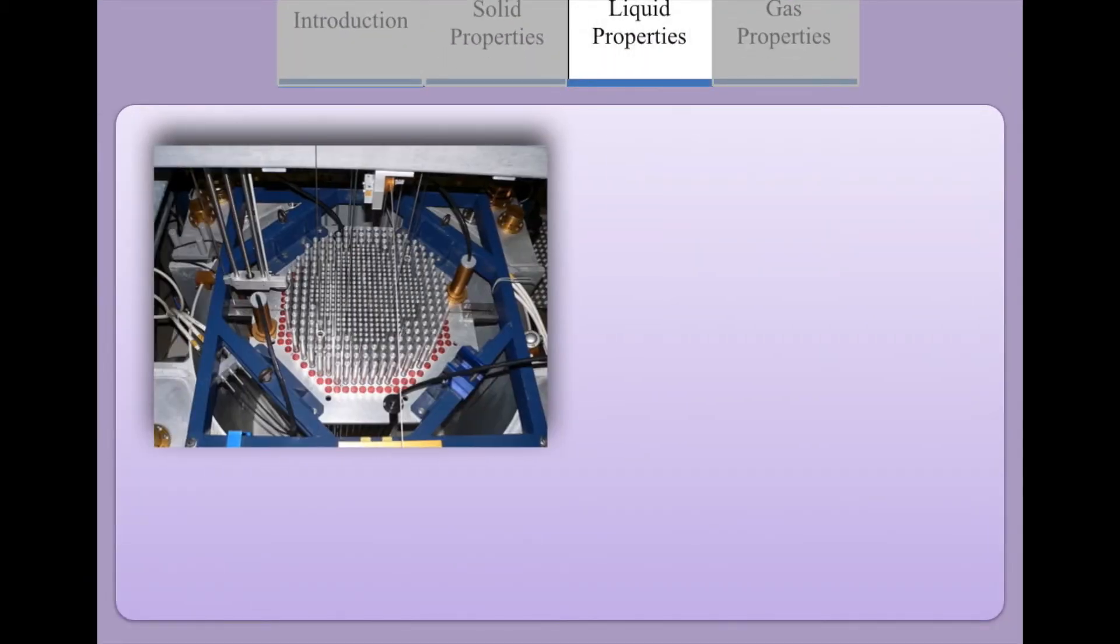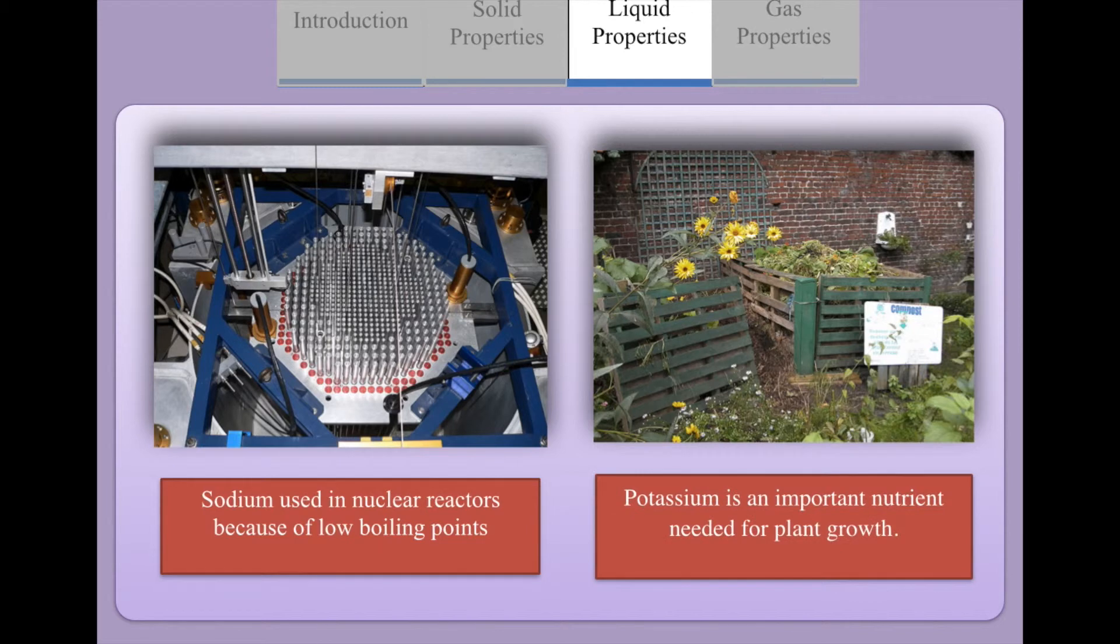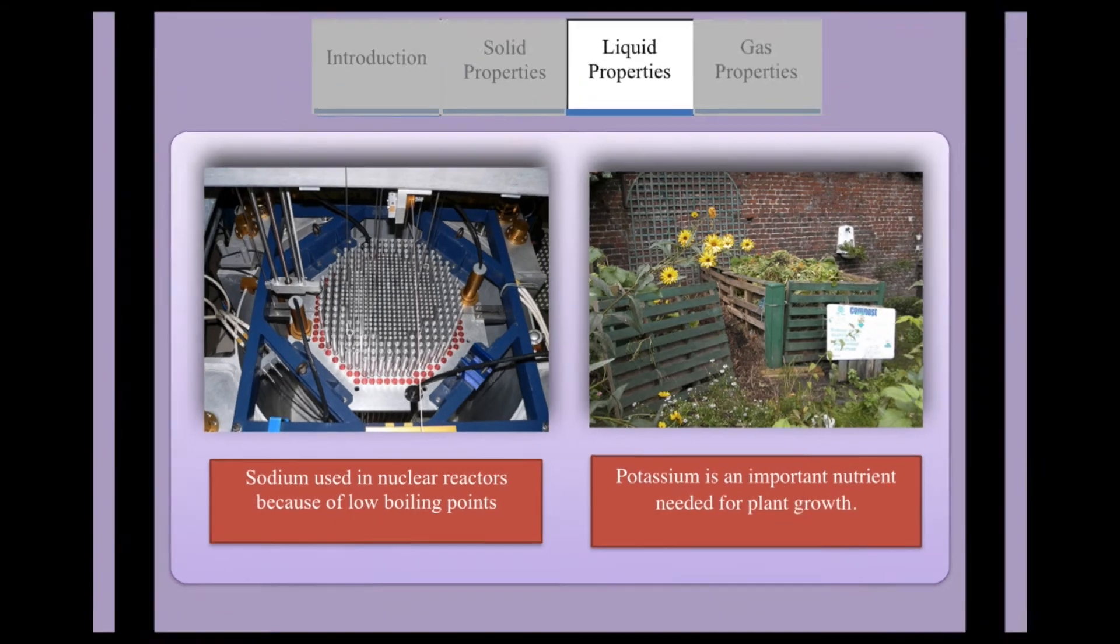Because of its low boiling point, sodium is used in nuclear reactors. Potassium is important for transferring nutrients within plants and is thus used in many fertilizers, as it is readily soluble.